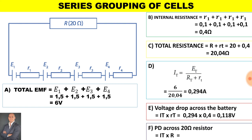To calculate the potential difference across the external load resistor, it will be the current throughout the circuit multiplied by the value of the resistor. Therefore the potential difference across the load resistor is 5.88 volts.